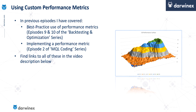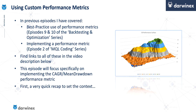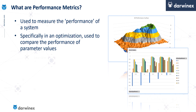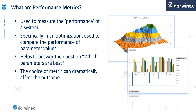In this episode, I'm going to focus specifically on the implementation of CAGR over mean drawdown as a performance metric. Performance metrics are used to measure the performance of a system, and specifically in any optimisation that you run, you can use the values from the custom performance metric to compare how well different parameter values perform. In a nutshell, it helps to answer the question: which parameters are best, or most robust? The choice of performance metric can actually dramatically affect the outcome of your optimisation process, so it's really important that you make the right choice.